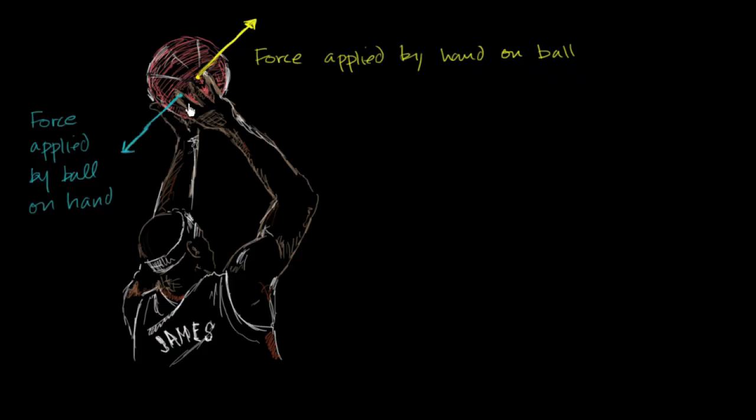So for example, the reason why your fingers and your hand don't flop backwards, don't accelerate backwards because of this force, is because you have muscles in your forearm. You have muscles in your forearm, roughly right around there, that are pulling on your fingers and on your hand, and are counteracting this force.